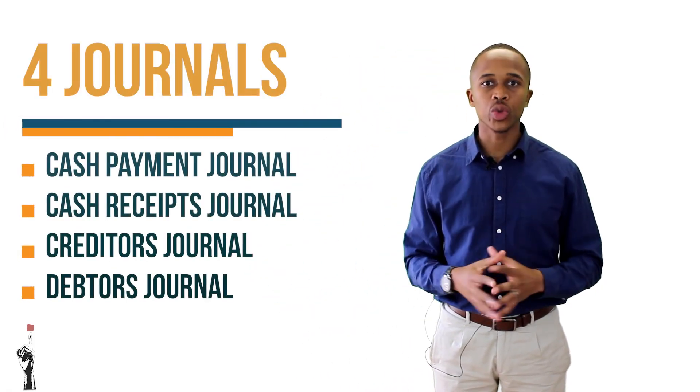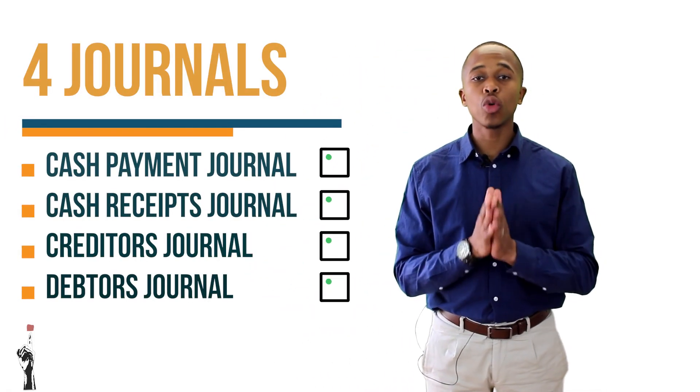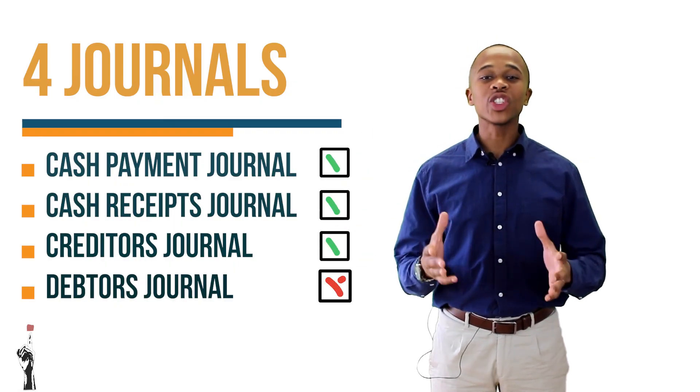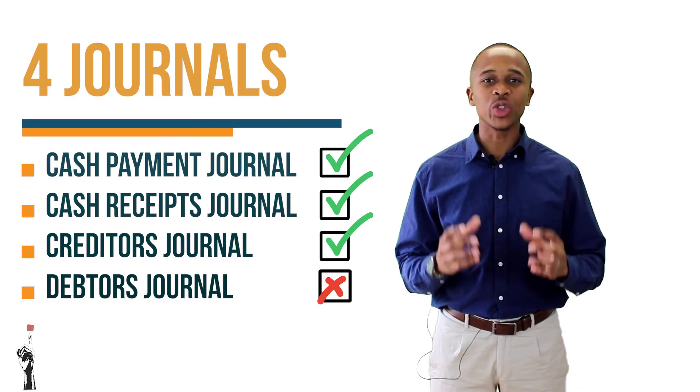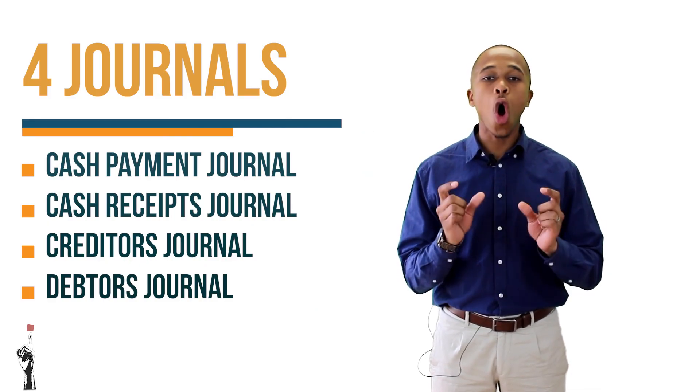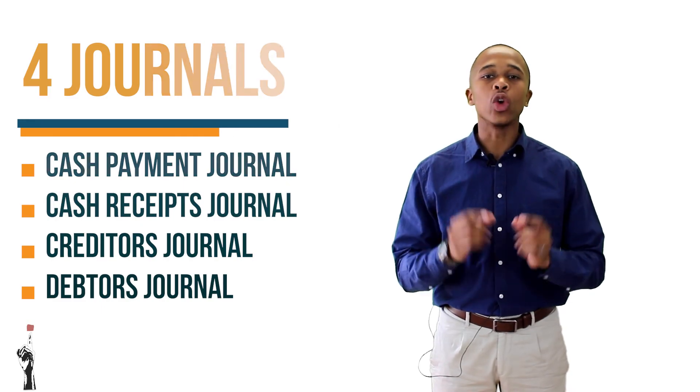That's it grade 9s. I hope this lesson helped you to remember all the journals we've done this year. We've looked at the four journals in one lesson today. If there's a journal that you have identified you struggle with, I would recommend going back to the previous lesson on that particular journal and watching that video again. See you soon for the next lesson — lesson three — which will be our second last lesson for the year.